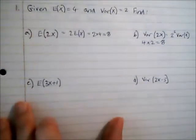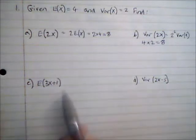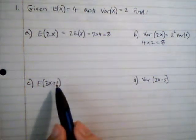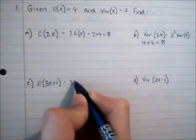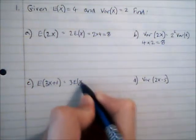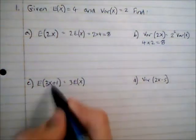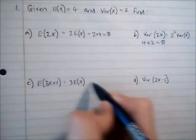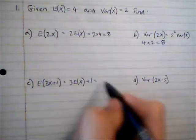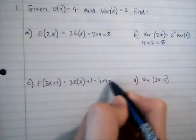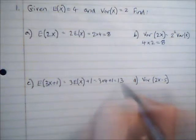For E(3X+1), we go through the same procedure but with a slightly more complicated function. This equals 3 multiplied by our expected value of X, because that's the coefficient of X, and then we add 1. So 3 multiplied by 4 plus 1 gives us a value of 13.